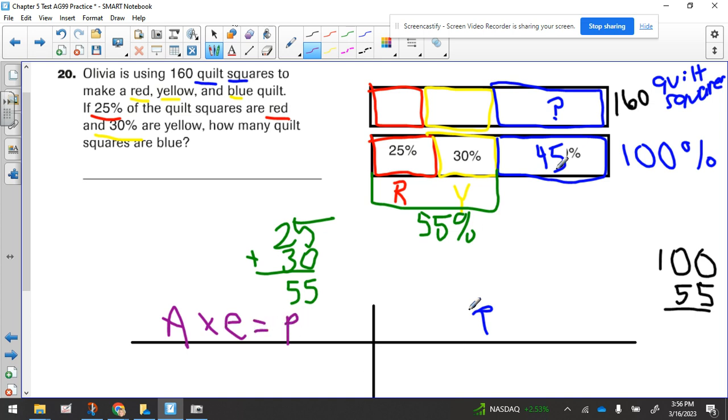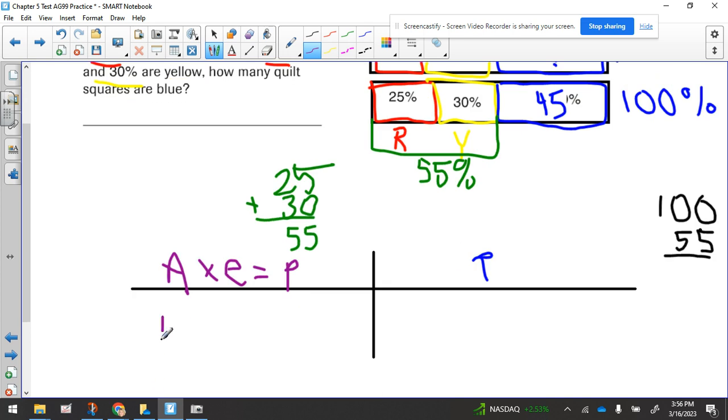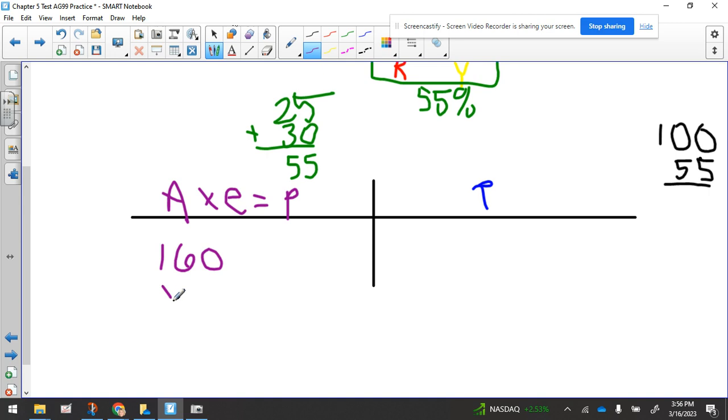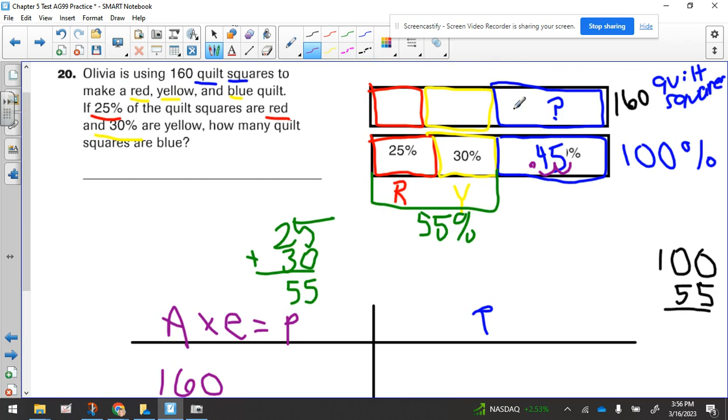So let's explore this option first. Now, we know the all of it number, which is 160. And we can turn this percent into a decimal, because remember, percent means out of 100 or divide by 100. Now, if we divide this by 100, that's the same as moving the decimal two to the left. So that would become 45 hundredths. So I can take this 160 and multiply it by 45 hundredths, or 0.45. And whatever answer I get, that would be the part. And I would put this number in the blue box, and that would be the answer.